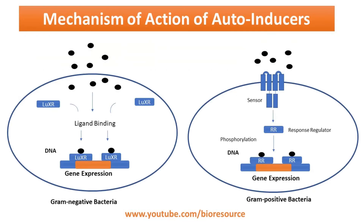Regarding the mechanism of action of autoinducers, there are two major pathways by which extracellular signals control gene transcription. Depending on the chemical structure, autoinducers activate transcription factors either by direct interaction or via receptor-mediated transcription factors. In contrast to AHL in gram negative bacteria, the autoinducers of gram positive species are unable to penetrate cellular membranes; instead their effects are mediated by a two-component system controlling transcription of corresponding genes.